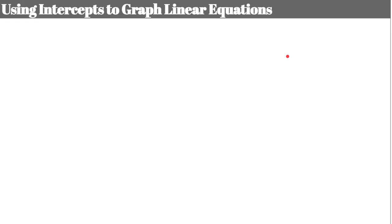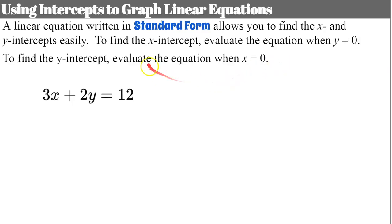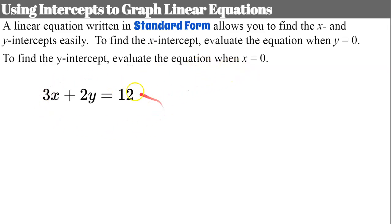Now let's talk about using intercepts to graph linear equations. A linear equation written in standard form allows you to find the x and y-intercepts easily. To find the x-intercept, evaluate the equation when y equals 0. To find the y-intercept, evaluate when x equals 0. Standard form is set up perfectly for this, and you only need two points to graph a line.